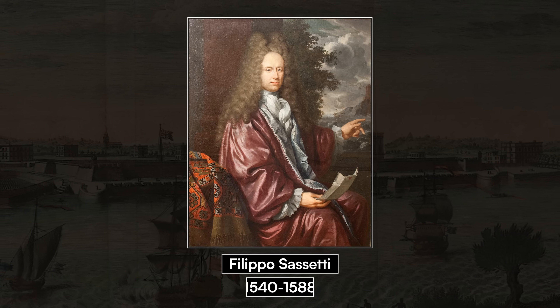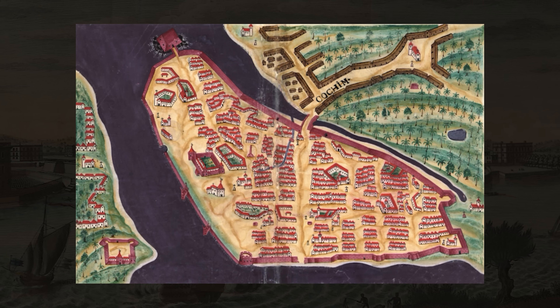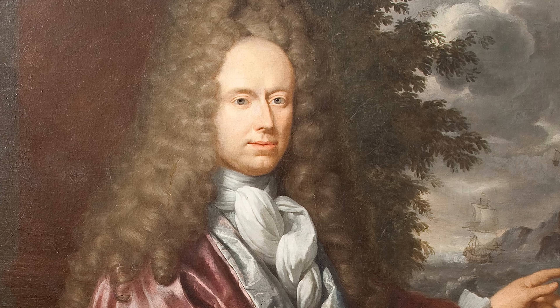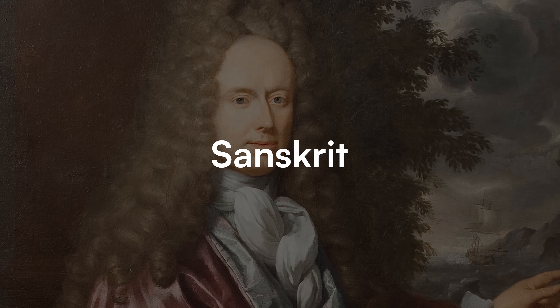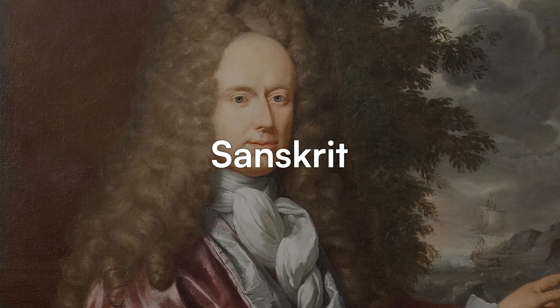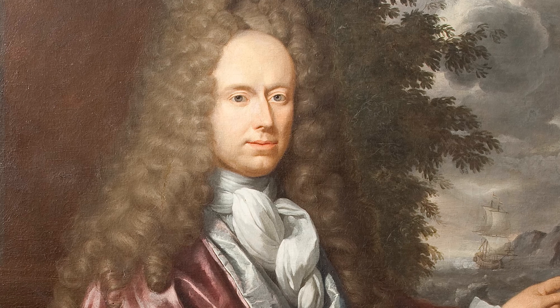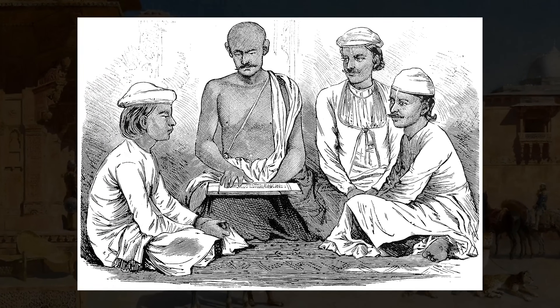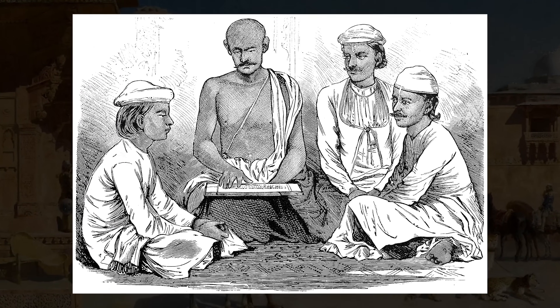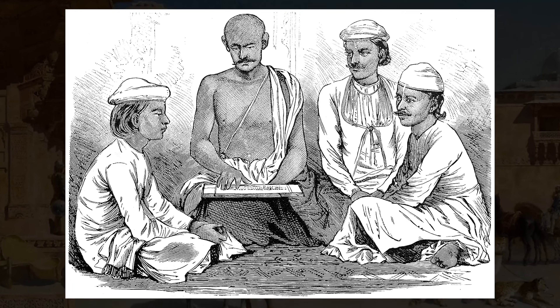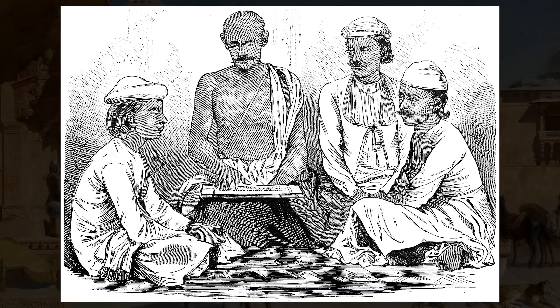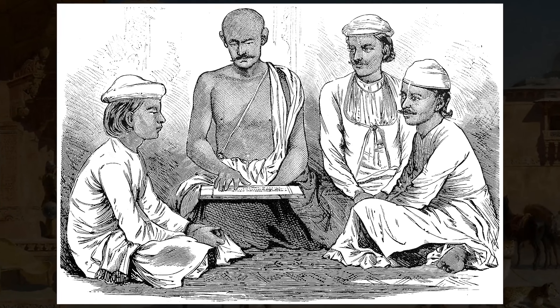In 1585, the Florentine merchant and literateur Filippo Sassetti, who was in Cochin, wrote a report on Indian culture in which he mentioned that India's sciences were written in a language so different from the vernacular that it required six years of study. In 1586, in a fragment of a letter, he referred to Sanskrit by name, mentioning its status as India's learned language, much like Greek and Latin for Europeans, but stated that Indians devoted much more time to studying it — about six or seven years. He noted that contemporary Indians could not say when it was a spoken language, even though they had an extensive knowledge of their history, and he pointed out some lexical similarities between Sanskrit and Italian, which persisted in the modern vernacular.